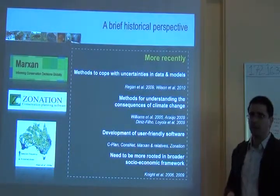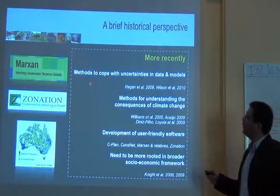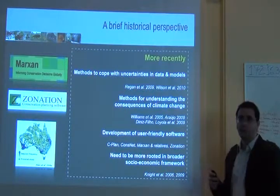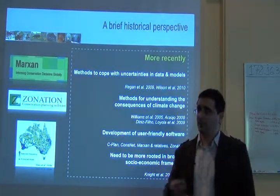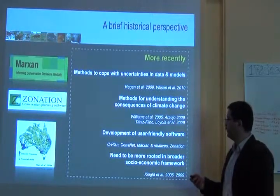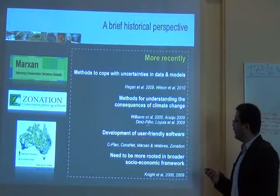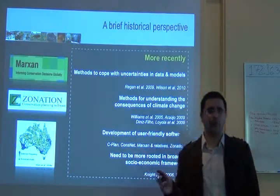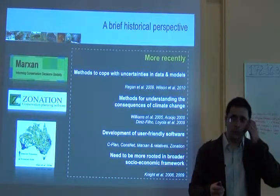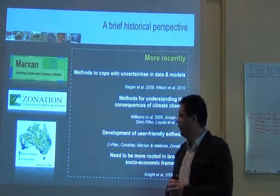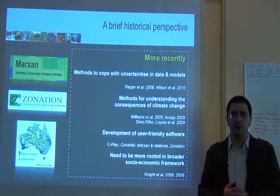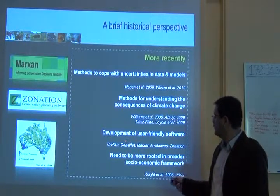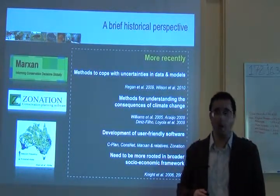More recently, we have developed methods to cope with uncertainty in data and models, and methods for understanding the consequences of climate change and how to integrate that into conservation planning. We have also developed user-friendly software. The worldwide-used software called Marxan is used for conservation prioritization — easy to use with a friendly graphic user interface running on Windows. We also have other software like ConsNet and Zonation, which is the one we're using today.